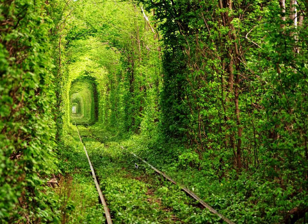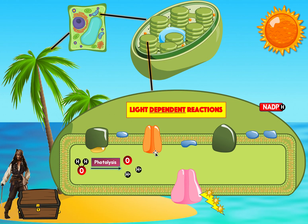In this video, we're going to be finishing the topic of photosynthesis. In the previous video, we talked about the first part of photosynthesis. We know that photosynthesis happens inside plant cells, specifically in this organelle called the chloroplast. The first part we learned about happens in the thylakoid — this little disk-like structure — and it's called the light-dependent reaction, because it depends on sunlight.